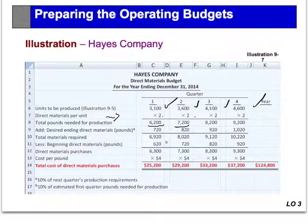They said they want 10% ending inventory. So in the first quarter, we need 6,200 pounds for production. We also want to have 10% of what we need in quarter two, which is 7,200 — so 10% is 720. The total is 6,920, but we already have beginning inventory, so we subtract that. Therefore, what we need to purchase is 6,300 pounds of raw material. The cost per pound is $4, so our purchasing budget for quarter one would be $25,200.